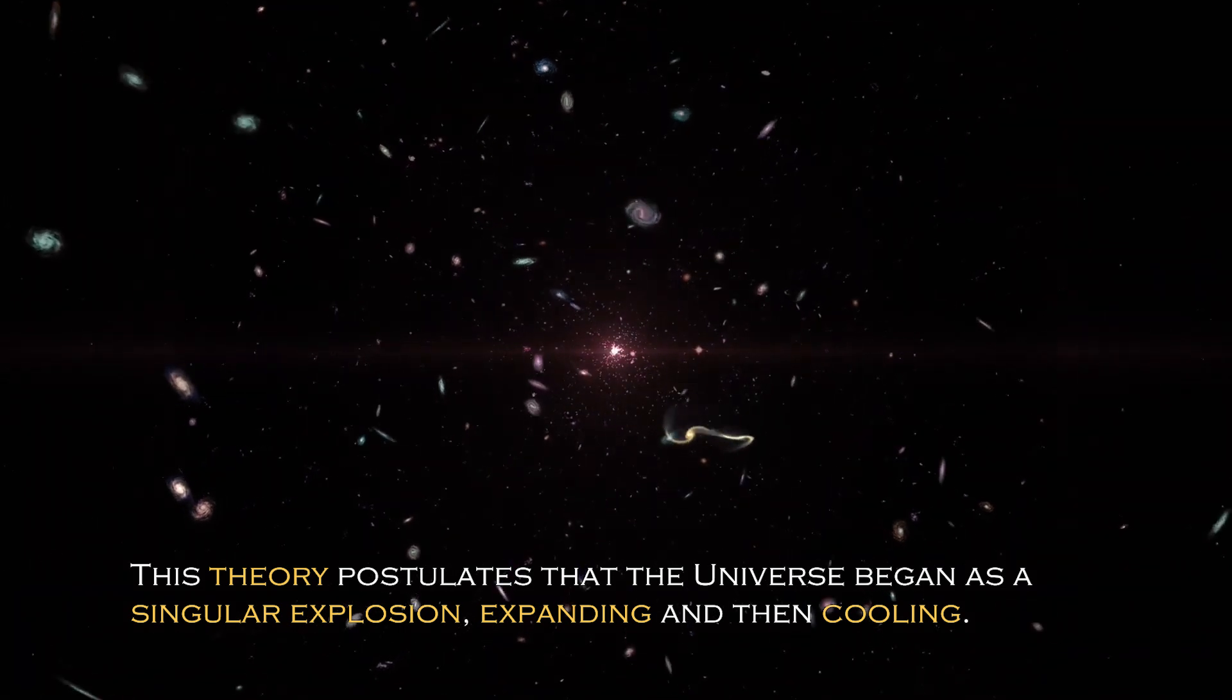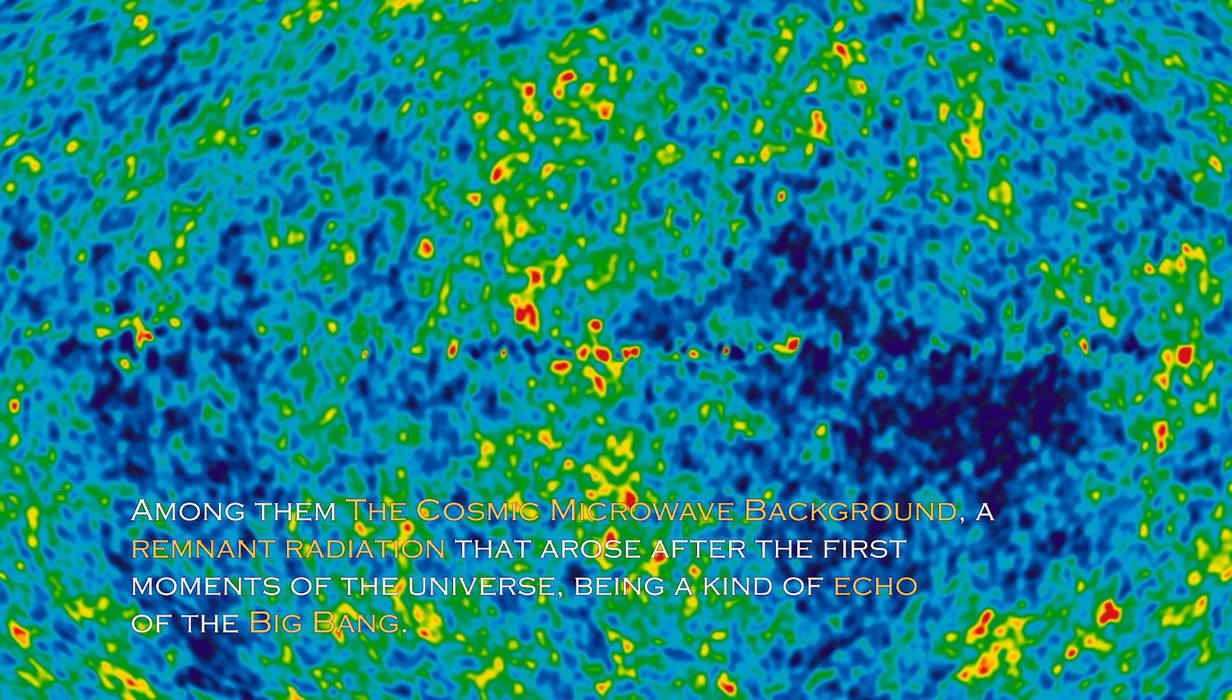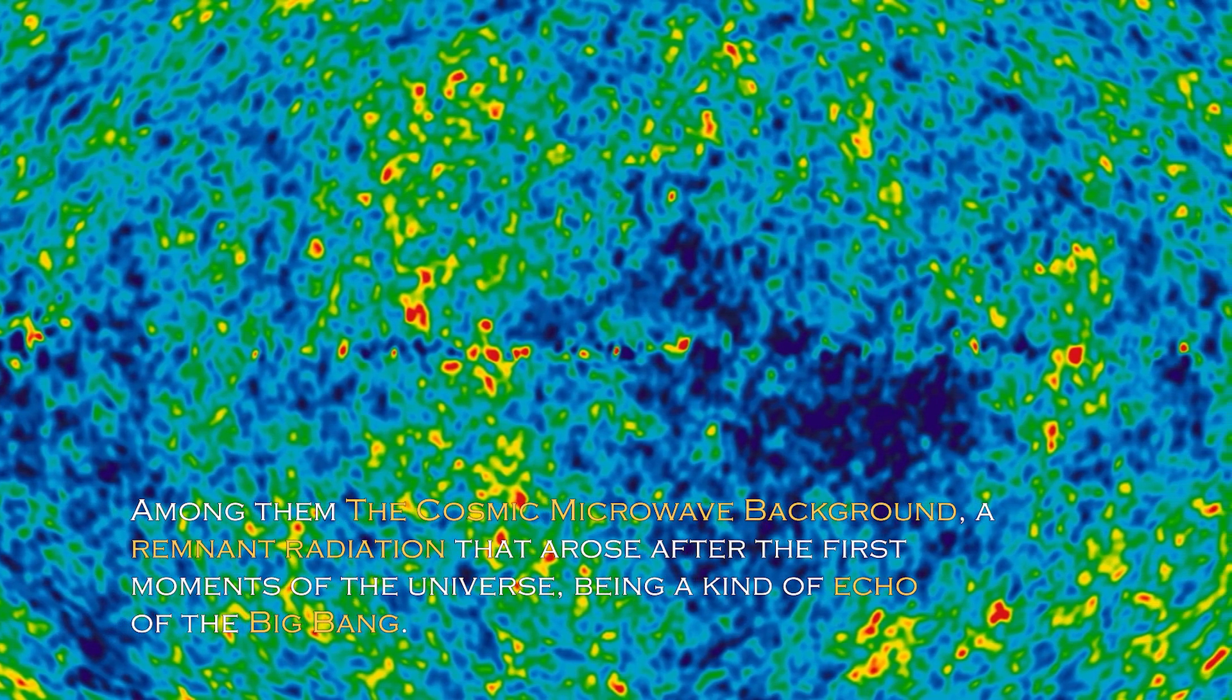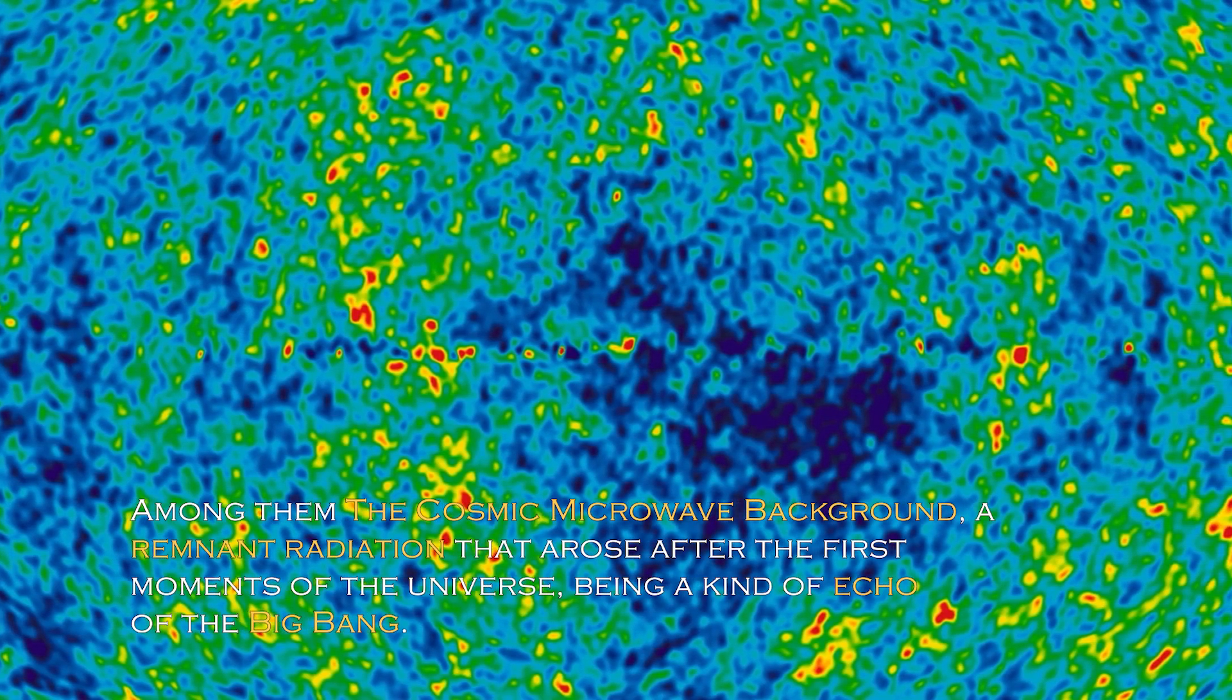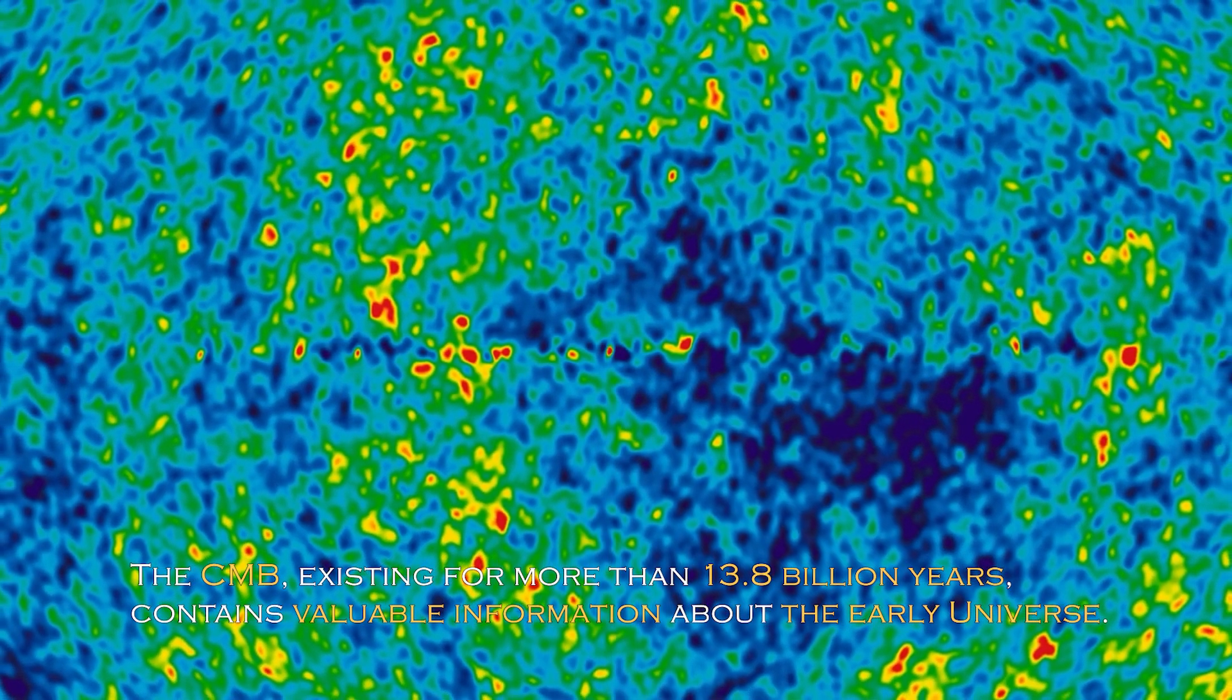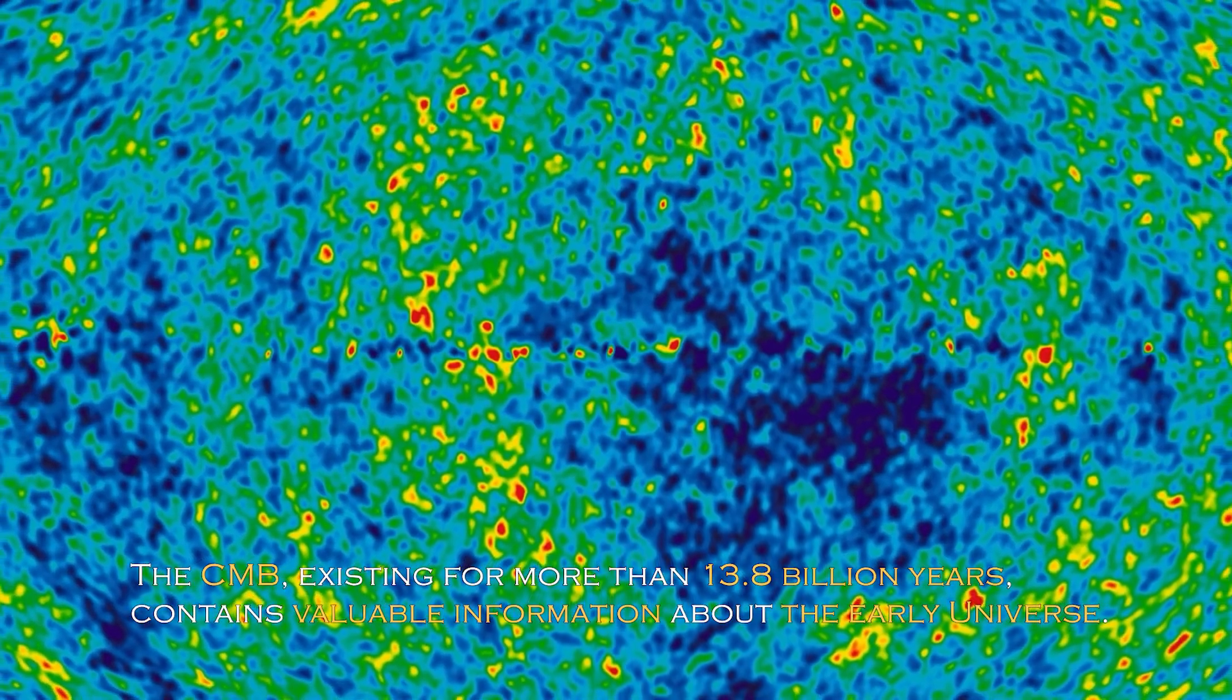There are several phenomena that support this theory, among them the cosmic microwave background, a remnant radiation that arose after the first moments of the universe being a kind of echo of the Big Bang. The CMB, existing for more than 13.8 billion years, contains valuable information about the early universe.